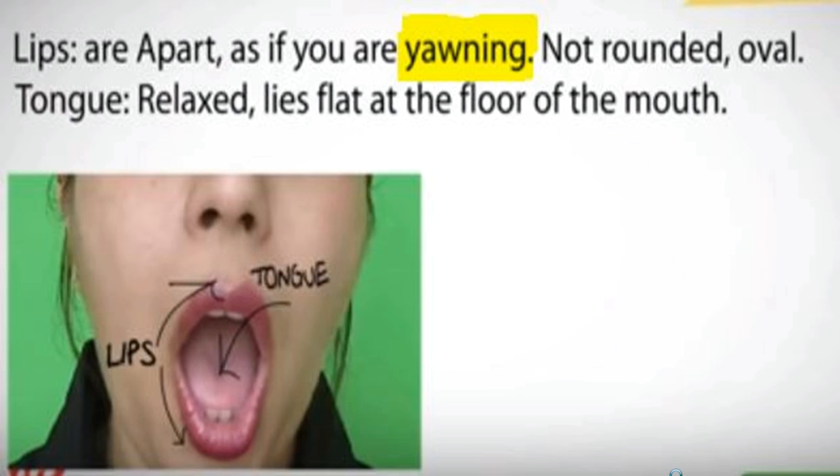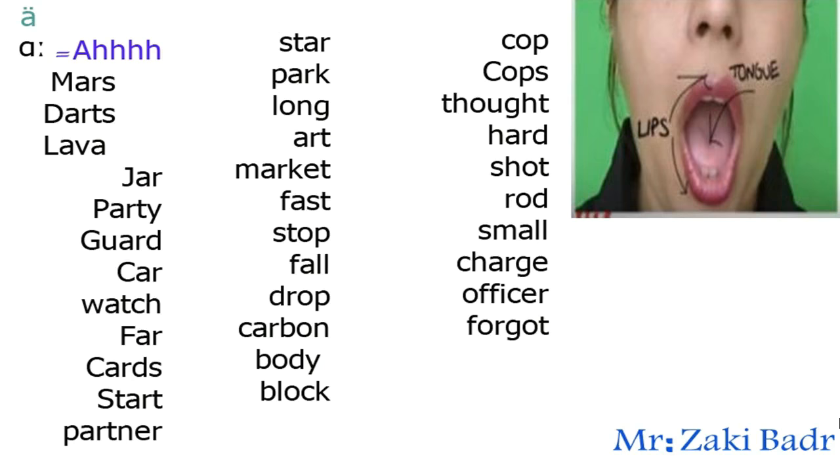Not rounded, oval. Tongue relaxed, lies flat at the floor of the mouth. Like the photo in the file, you can see this mouth shape. Let's say together: AH. Open your mouth while you're saying AH.